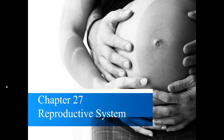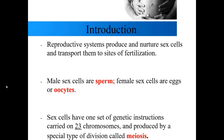Welcome back to the class. In this video we will go over chapter 27, the reproductive system. The whole point of the reproductive system is to produce and nurture sex cells and then transport them to sites of fertilization. There are different sex cells depending on whether they're produced by the male or female. The male sex cells are sperm and the female sex cells are eggs, also known as oocytes — whenever you see the prefix 'oo,' that's always a reference to egg.